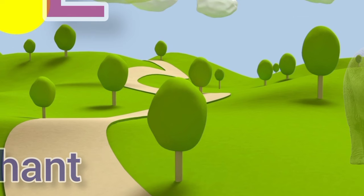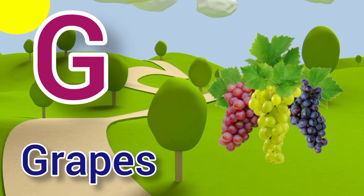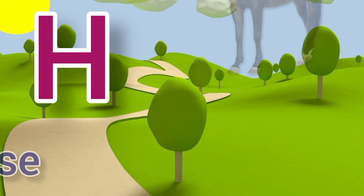F for fish, fish means machli. G for grapes, grapes means angoor. H for horse, horse means goda.